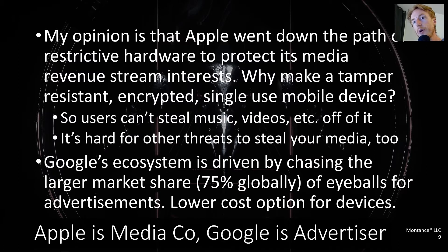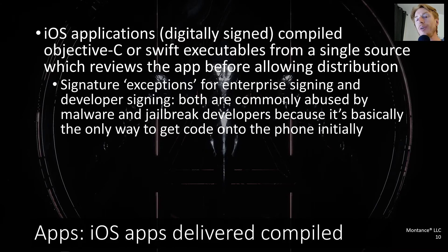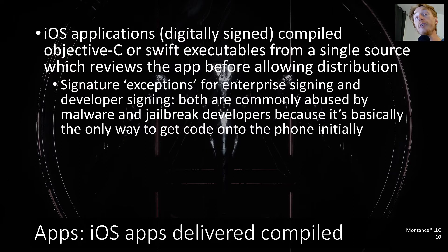The Google ecosystem is largely driven by market share — 75% of global mobile devices run Android. It's a much lower cost of entry for consumers, and hardware manufacturers can use the OS freely. iOS applications are delivered as compiled executables written in Objective-C or Swift. An app must come from Apple with a digital signature; even enterprise and developer certificates are still signed by Apple, authorizing you to further sign applications.